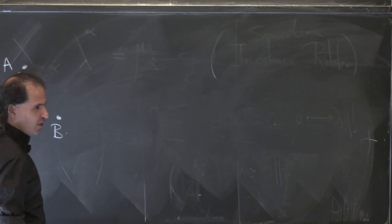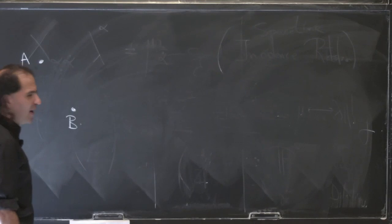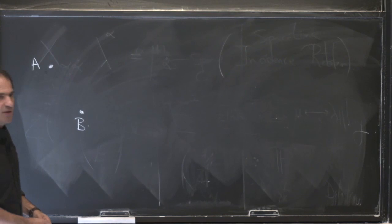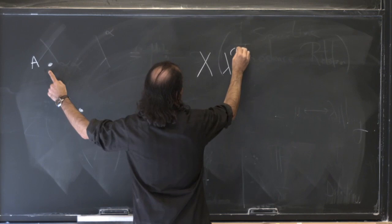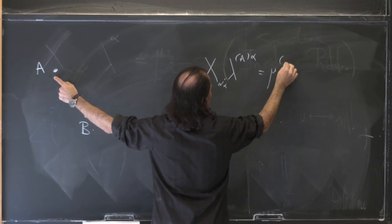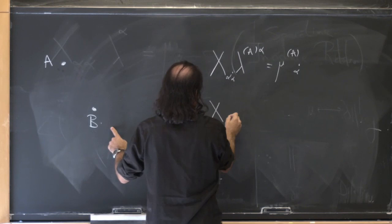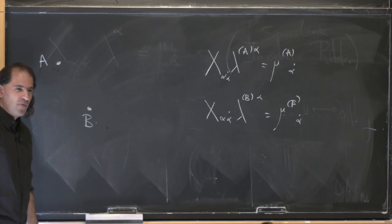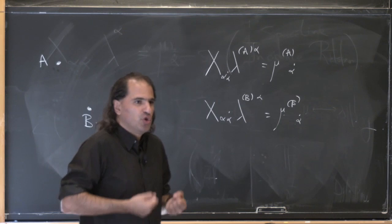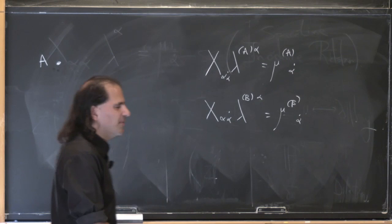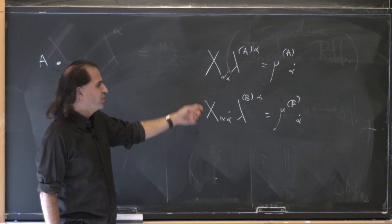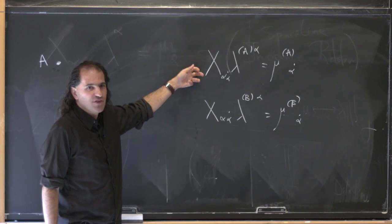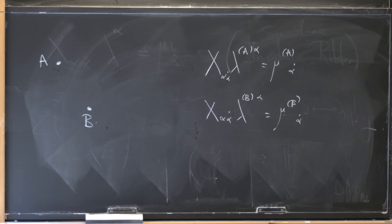Let's say we have two points A and B in twistor space. Each one of them is associated with some null ray. But we can ask: are there any points in common between those two null rays? So, x-alpha-alpha-dot times lambda_A-alpha equals mu_A-alpha-dot for belonging to this ray, and similarly for B. If you want to say it geometrically, two planes in four dimensions intersect in a point, generically. But we can also see it algebraically — this is now four equations, two here and two here, for the four unknowns x-alpha-alpha-dot.